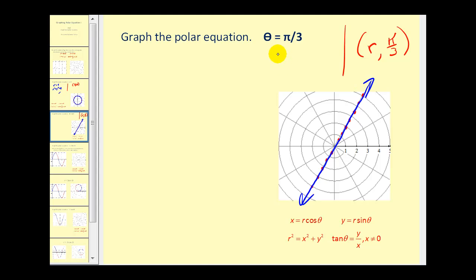If we really wanted to convert this to rectangular form, what we could do is take the tangent of both sides. So tangent theta is equal to the tangent of pi over three. Well the tangent of pi over three, that's a 60 degree angle, would be the square root of three over one. Next, remember that tangent theta is equal to y over x. So let's go ahead and perform that substitution.